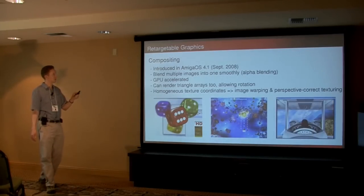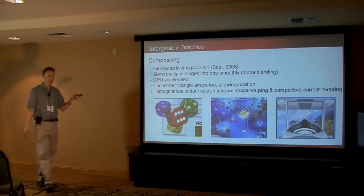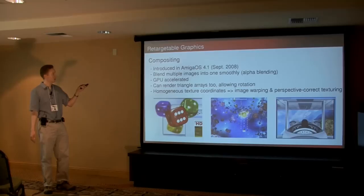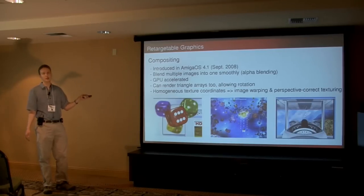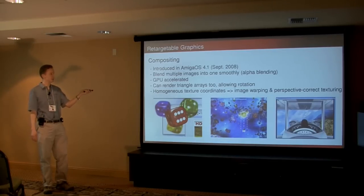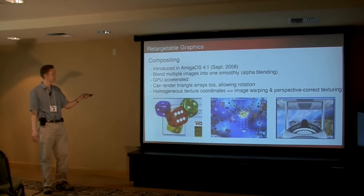Moving along, this is fairly recent 2D stuff — well, 2008 — introduced in AmigaOS 4.1. We got compositing, which basically means you can blend multiple images together smoothly. With an alpha channel, it says how transparent things should be. So this really ups the visual quality of what you can do.